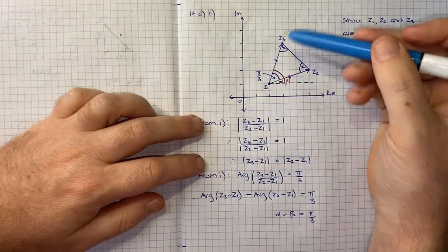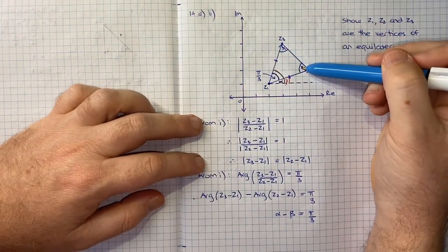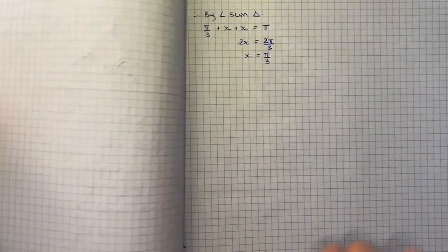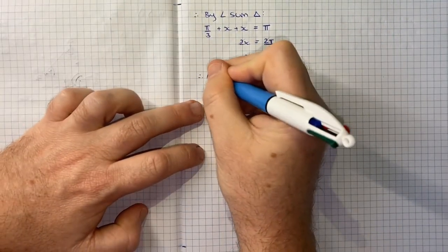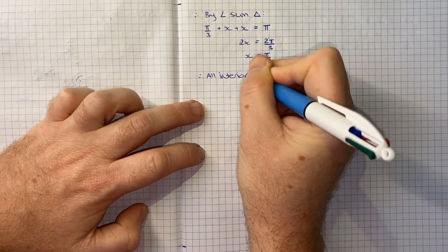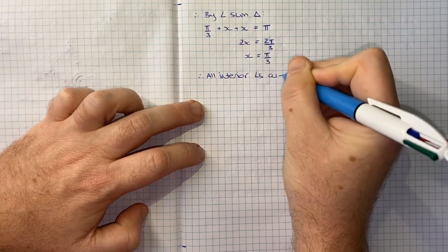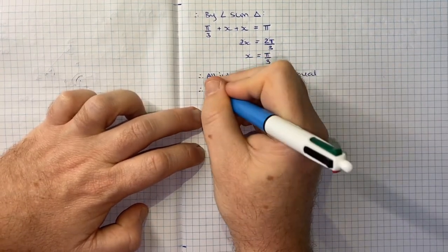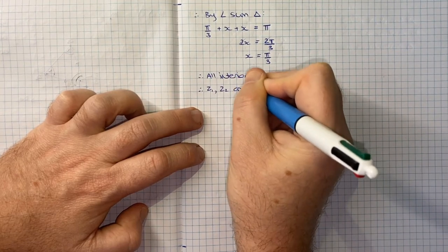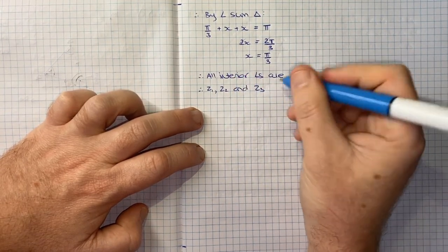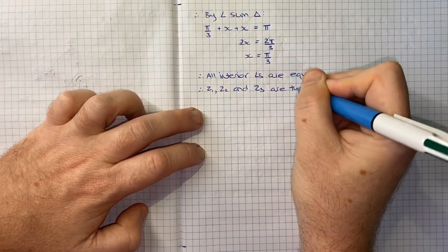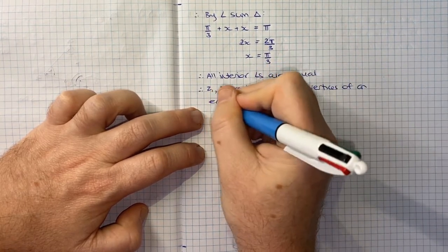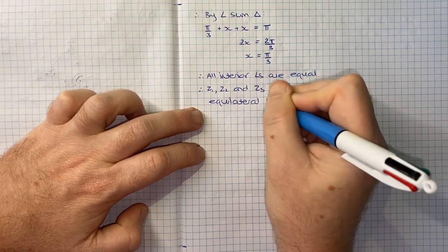And if X is π on 3, that means this angle and this angle is π on 3. And we know this angle is π on 3. We already worked that out. So therefore, all interior angles are equal. They're all equal to π on 3. And therefore, we can draw a conclusion that Z1, Z2, and Z3 are the vertices of an equilateral triangle.